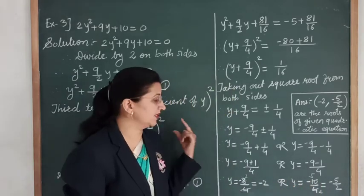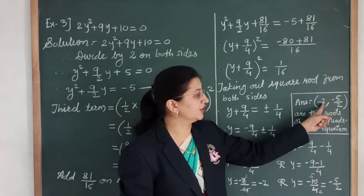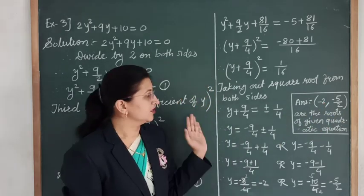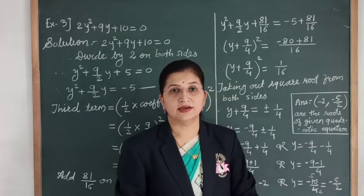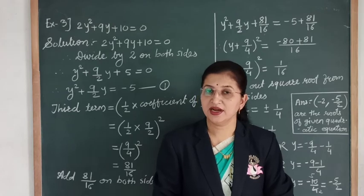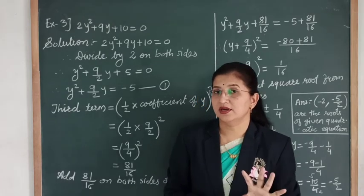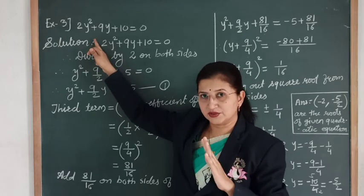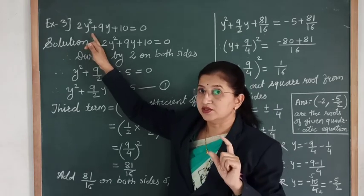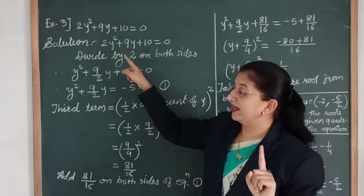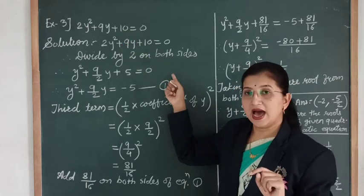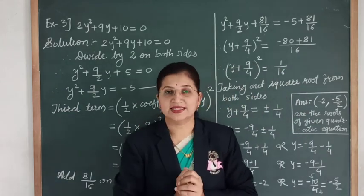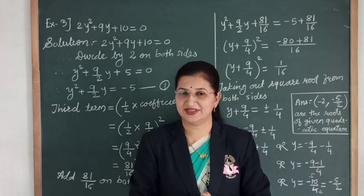So the roots of the given quadratic equation 2y² + 9y + 10 = 0 are -2 and -5/2. In this way, we have solved some quadratic equations by the completing square method. One important thing to keep in mind: before finding the third term, make sure the coefficient of x² or y² is 1, and after making it 1, transfer the constant term to the RHS. Then find the third term using the formula. I hope it is clear how to solve quadratic equations by the completing square method. Thank you.